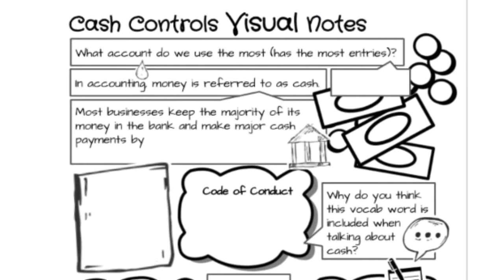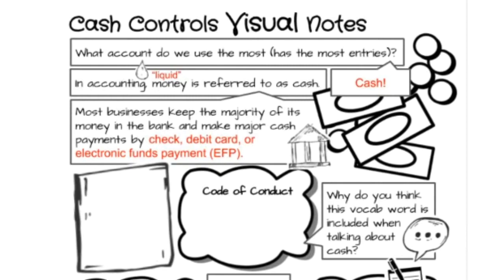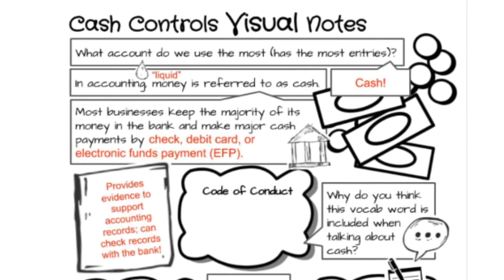What account do we use the most? Which account so far in accounting has the most entries? The answer is cash. In accounting, liquid money is referred to as cash. Most businesses keep the majority of their money in the bank and make major cash payments by check, debit card, or EFT, which stands for electronic funds payment. When we say cash, it is not a stack of money sitting on the business owner's desk or in a safe — it is the cash account, meaning the checking account in the bank.